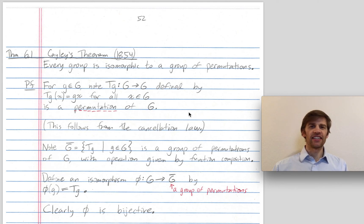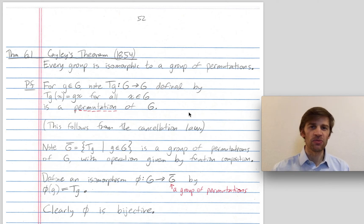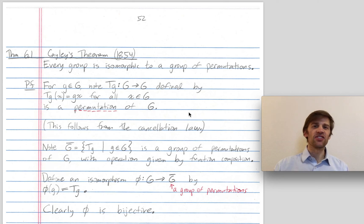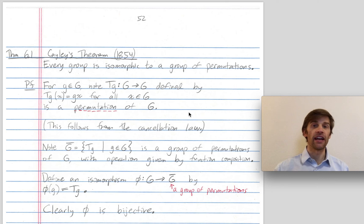Hello everybody. Today I'd like to describe Cayley's theorem. Cayley's theorem says that every group is isomorphic to a group of permutations. So in some sense that means that in group theory you don't need to study all groups — you could just instead study the permutation groups. In reality it's useful to have the notation and origins of different groups besides just permutation groups. But really Cayley's theorem says that any property exhibited by any group is also exhibited by a group of permutations.